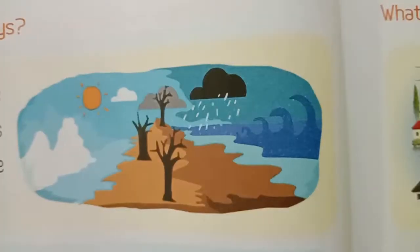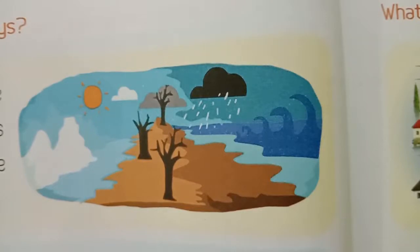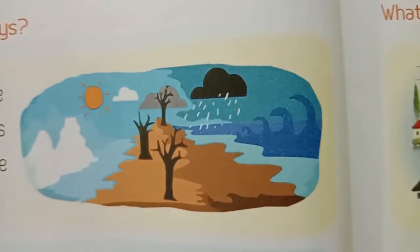Children, observe this picture. Why are extreme climate changes taking place these days? Scientists have been warning that the world's climate is changing a lot due to the direct or indirect actions of human beings and their intervention in nature. The main reason for this change is global warming.